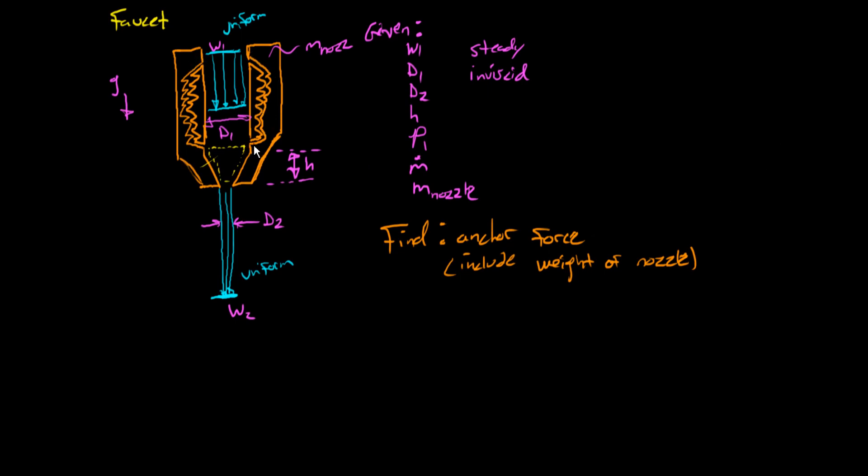So there's this nozzle and it's screwed onto a pipe. This is supposed to be like pipe threads. We're given a lot of information here, so let me just summarize it for you. The flow comes in in a uniform velocity profile. It goes through this nozzled cone section and comes out in a skinnier jet. That's what's interesting.